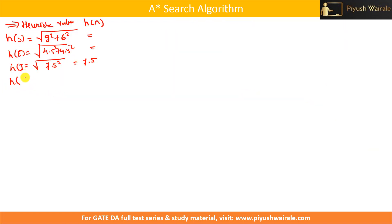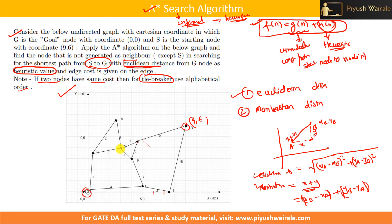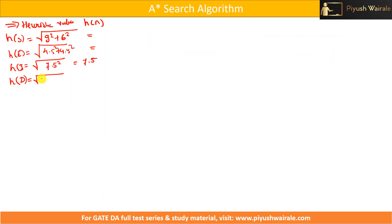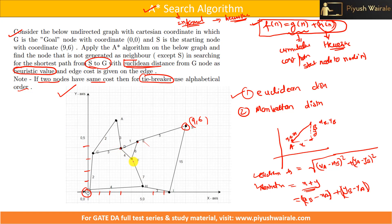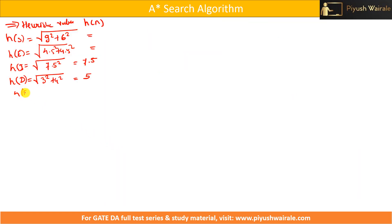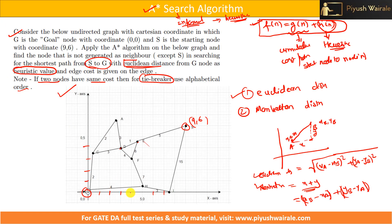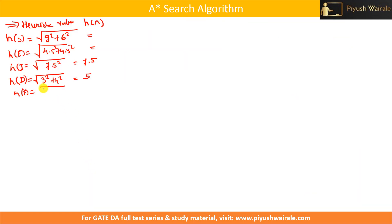h(D): the coordinates give square root of 3² + 4², which is the square root of 9 + 16 = 5. h(F): the coordinates give square root of 4² + 3², which is also 5.